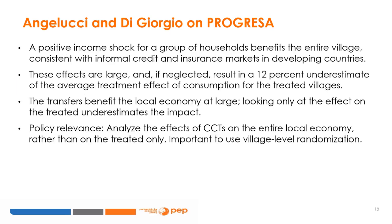This shows that there are spillover effects from the PROGRESSA conditional cash transfer program that benefited the whole community, not only eligible individuals in the treatment communities. The positive income shock for a group of households benefits the entire village, consistent with the presence of informal credit insurance markets in developing countries. The effects are large — if neglected, they would result in a 12% underestimation of the average treatment effect on consumption for treated villages. Analyzing the effect of conditional cash transfer programs should be done at the entire local economy level, rather than on treated households only. In this case, village-level randomization was very useful.